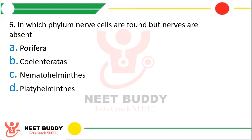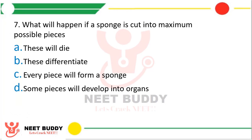Question sixteen: in which phylum are nerve cells found but nerves are absent? Option A, Porifera; option B, Coelenterata; option C, Nematohelminthes; or option D, Platyhelminthes? The correct answer is option B, Coelenterata.